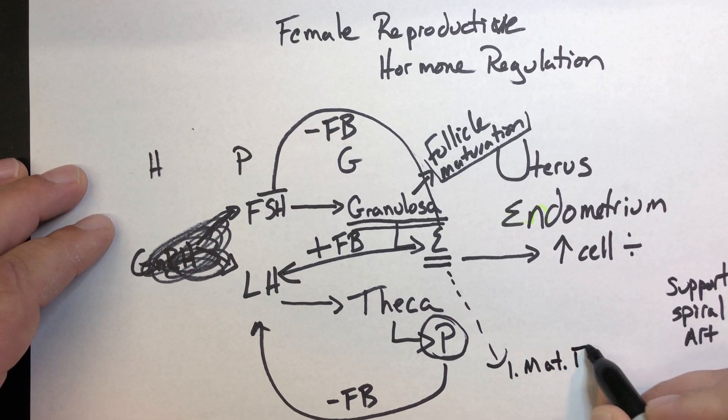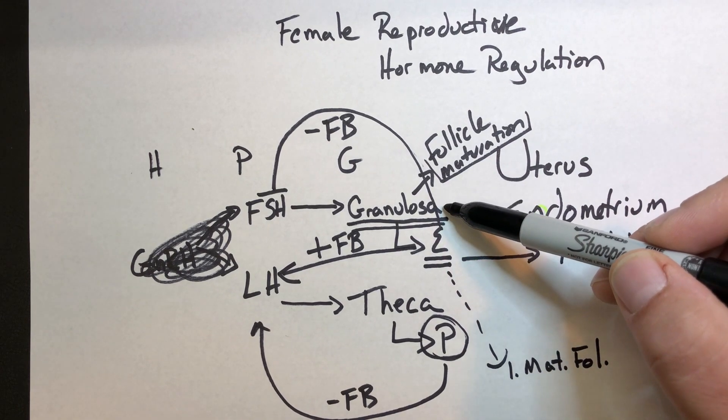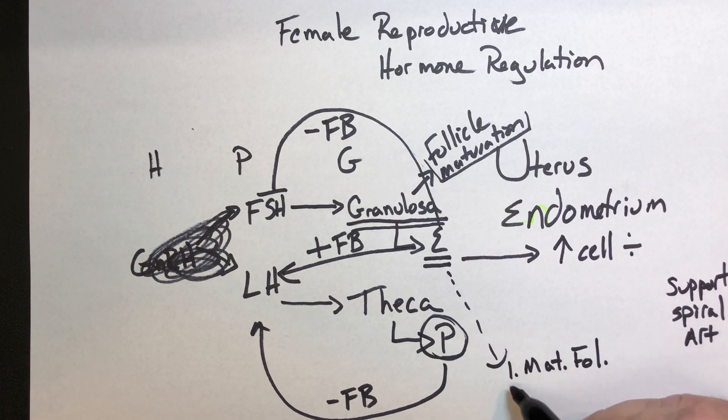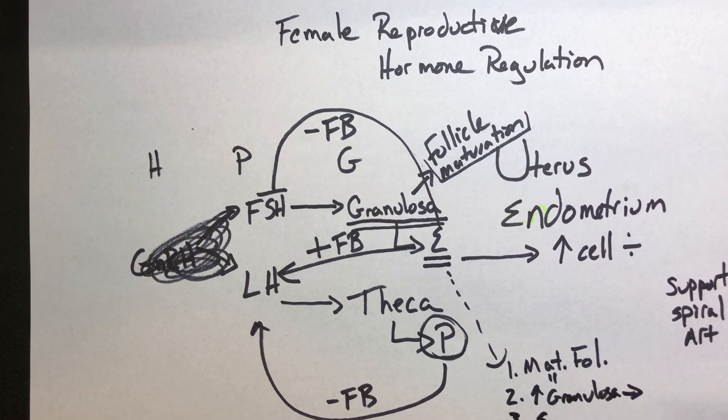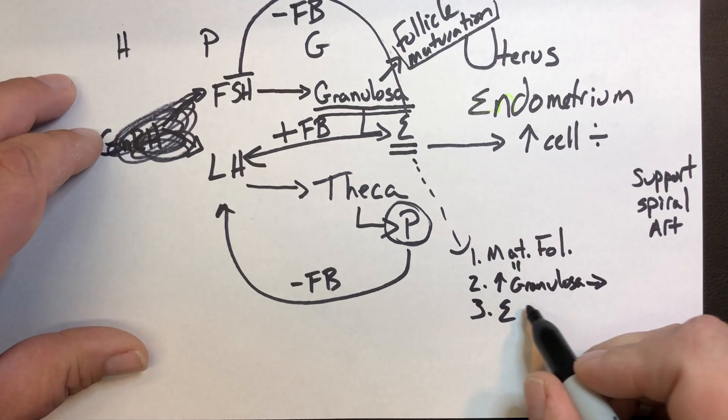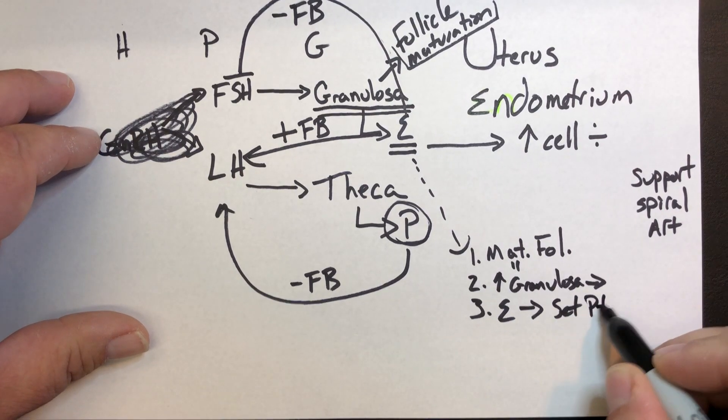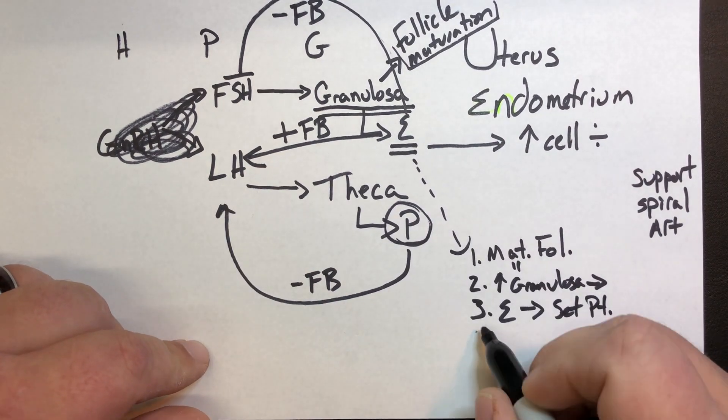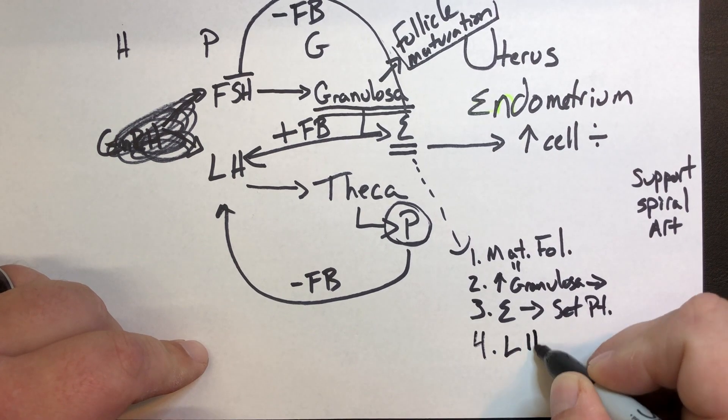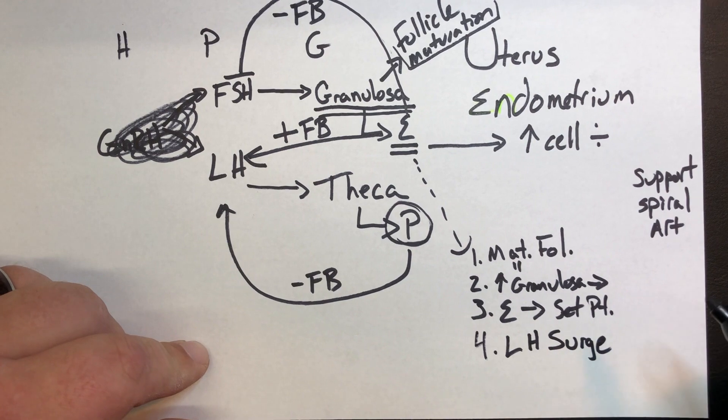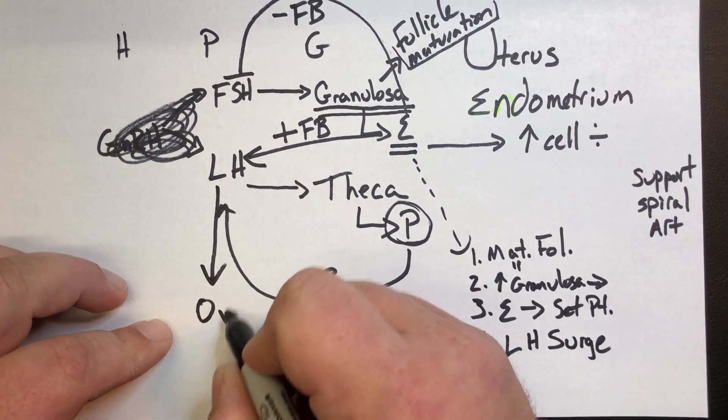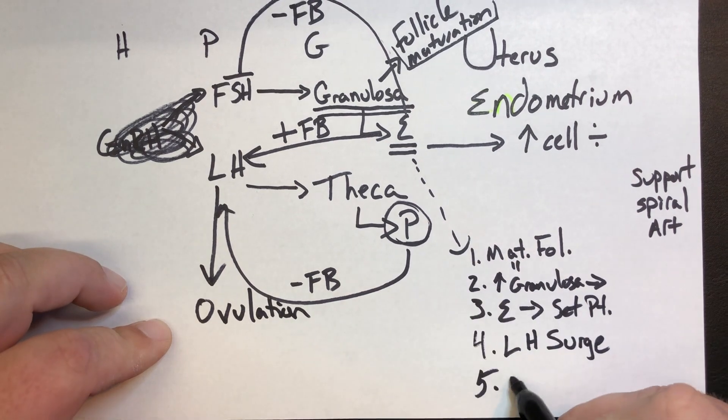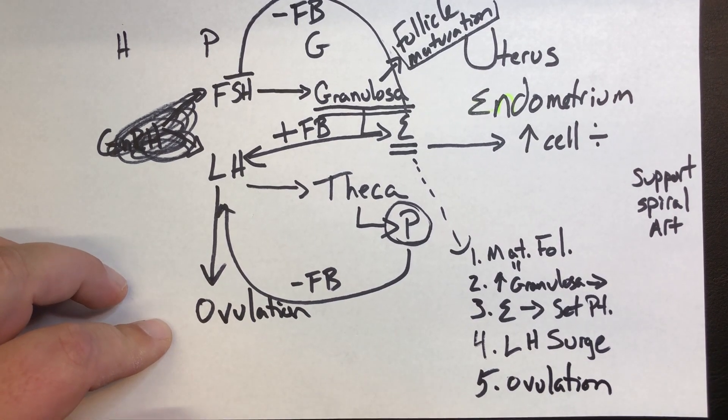So what we see is that a mature follicle means that there's a lot of granulosa. So the most granulosa, which means there's a lot of estrogen. If there's a lot of estrogen, we get to the set point for this positive feedback relationship. And at that set point, we would see the LH surge. The LH surge is that positive feedback relationship which leads to ovulation, in that order.